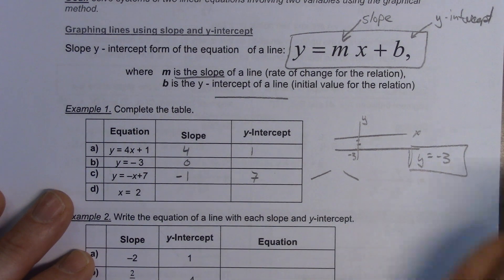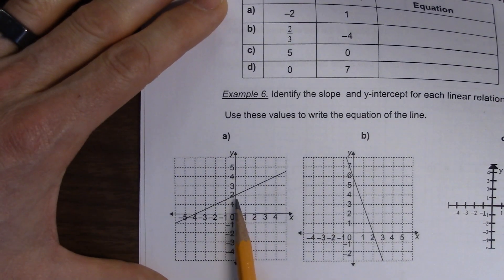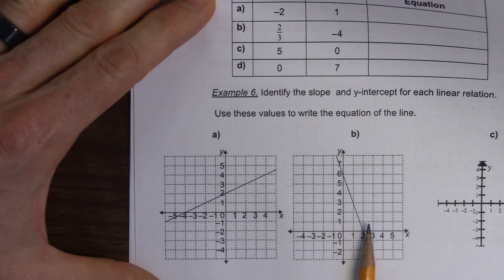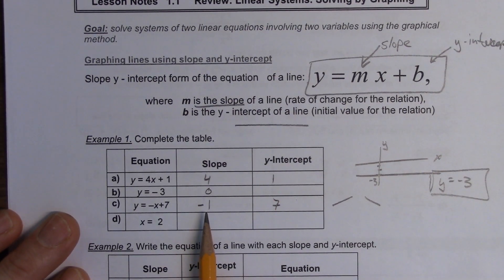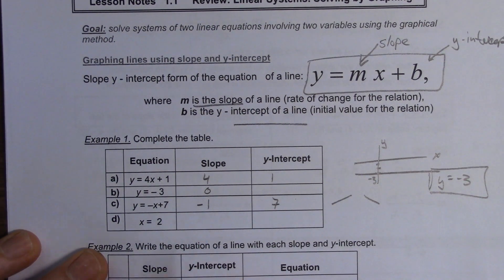Yeah, the slope is actually the direction of the way the line goes, right? So, this would be a positive slope, and this would be a negative slope. So, what's this? Going to go up or down? It's going down. Yeah, it's going down.